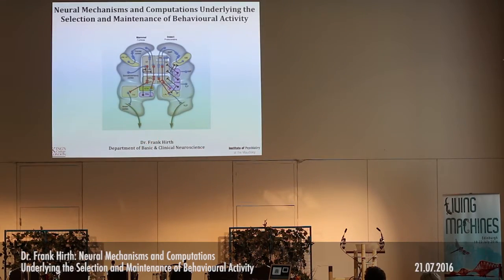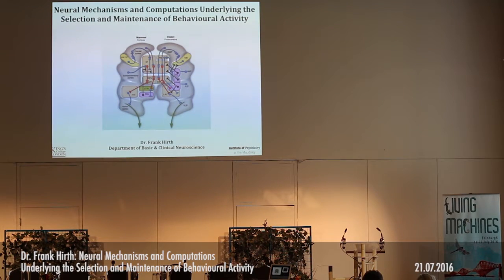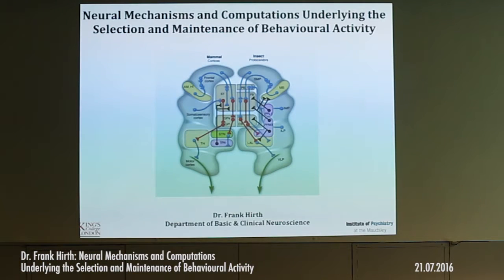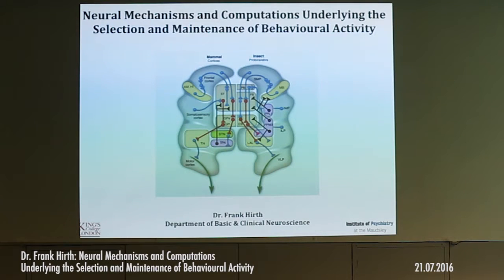My talk will be divided into basically three parts. The first part, I try to argue that there is a region in the insect brain that Barbara Webb introduced — the central complex — and that it gives deep homology to the basal ganglia. Then I will provide some data to give you more insights into how this is progressing, and in the third part I'll throw a few ideas at you where we are going. The evolutionary implications I have kept out, but I'm happy to discuss that afterwards.